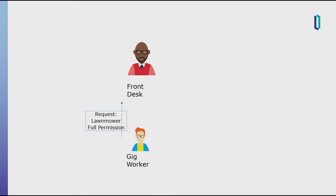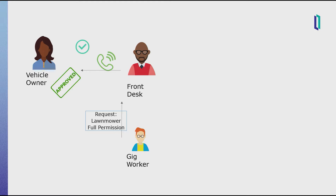The gig worker approaches the front desk and asks to access the owner's lawnmower. 'My name is Doug Smith. I registered earlier here as a gig worker. I'd like to have full access permission to Sarah Peterson's lawnmower.' The desk worker replies, 'All right, sir. Let me just check to make sure that's all right with Ms. Peterson.' The front desk worker calls the vehicle owner and confirms it's her. The owner agrees: 'Yes, you can give Doug Smith that access.' The desk worker then says, 'Ms. Peterson has agreed to give you access. Take this code on this paper over to that counter over there. They'll check your ID and then issue you a ticket for access.' The gig worker submits the paper with the code to the other counter and shows his ID.